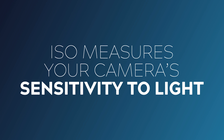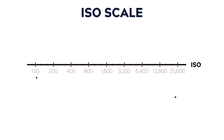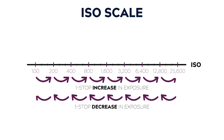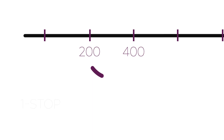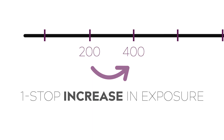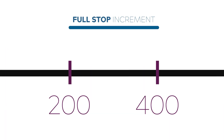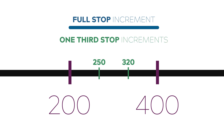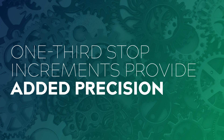Let's start with ISO. ISO simply measures your camera's sensitivity to light. If we look at this ISO scale, a one stop increase or decrease occurs when the value doubles or halves. So a jump from 200 ISO to 400 ISO is a one stop increase. Most cameras will allow you to control your ISO in either full stop or one third stop increments. There is also a half stop increment, but these are less common. I prefer one third stop increments because I find full stop increments to be a little bit too big of a jump, and I like that added precision.